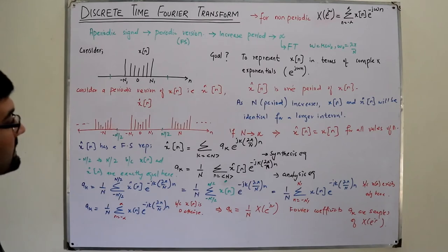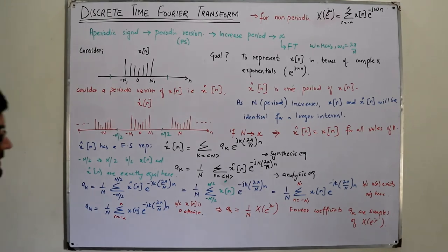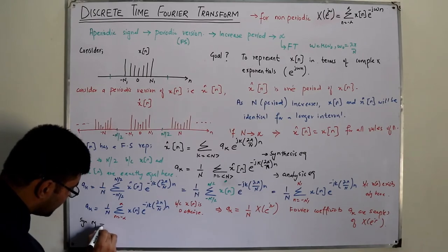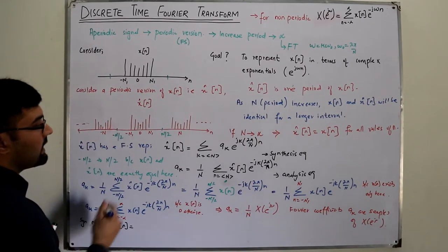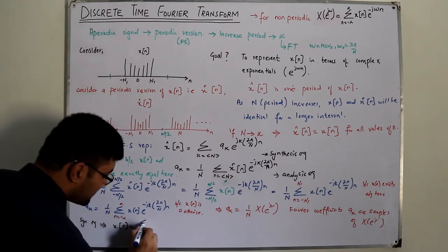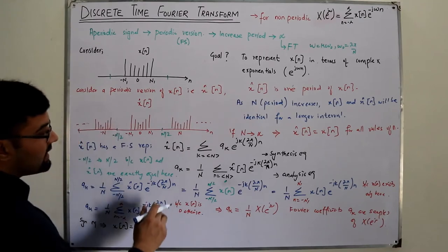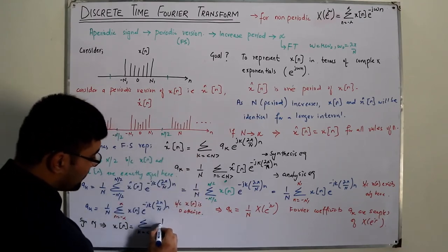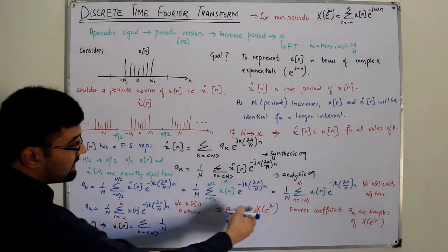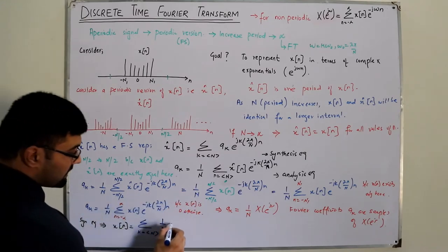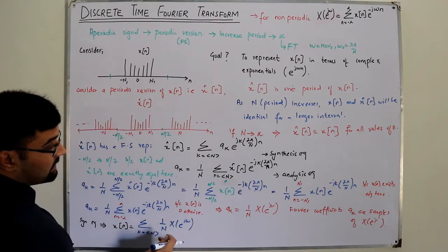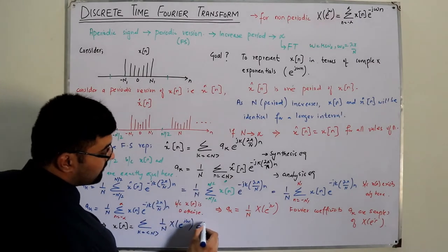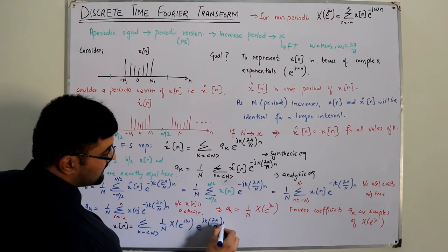Now I substitute the value of Aₖ into the synthesis equation. This gives: x̂[n] = Σₖ (1/N) · X(e^{jω}) · e^(jk·2π/N · n), summing k over one period. Since ω₀ = 2π/N, we have 1/N = ω₀/(2π), so we can write x̂[n] = Σₖ (ω₀/2π) · X(e^{jω}) · e^(jk·2π/N · n).